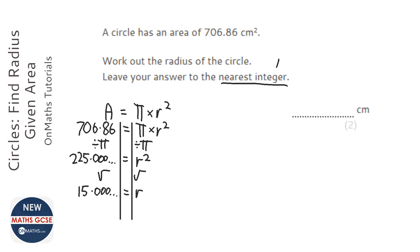Now it says it needs it to the nearest integer. Now integer just means whole number. So to the nearest whole number that's just going to be 15.